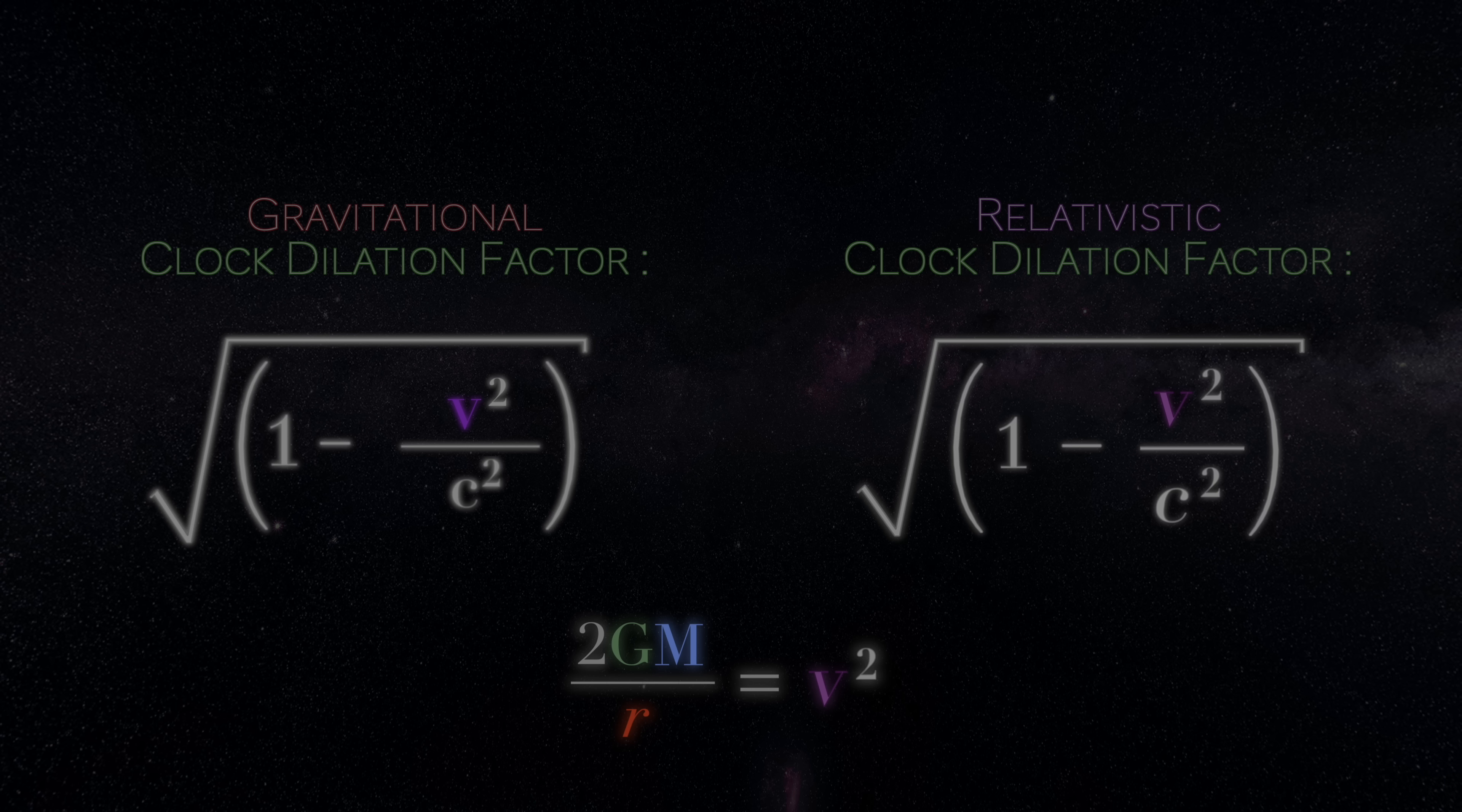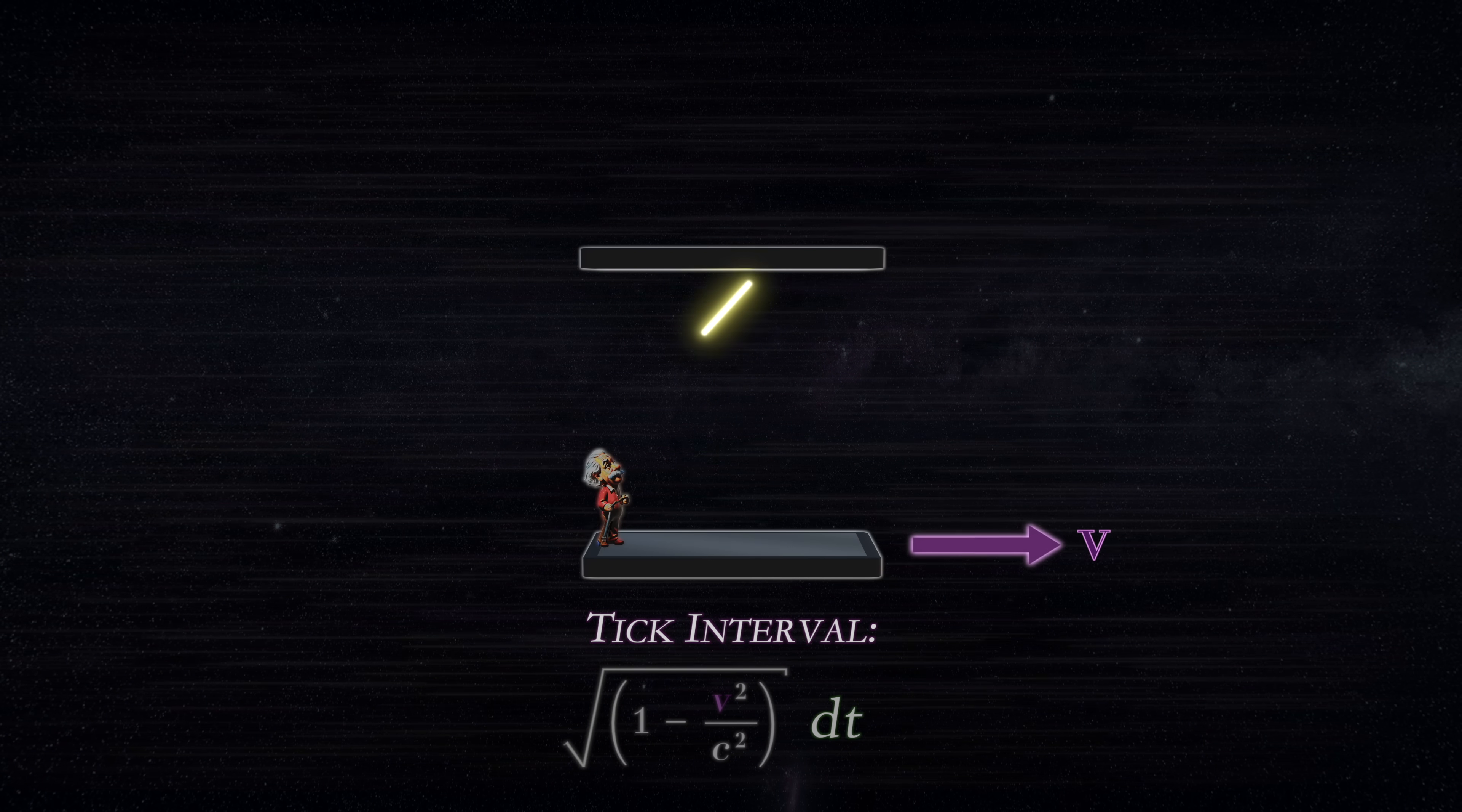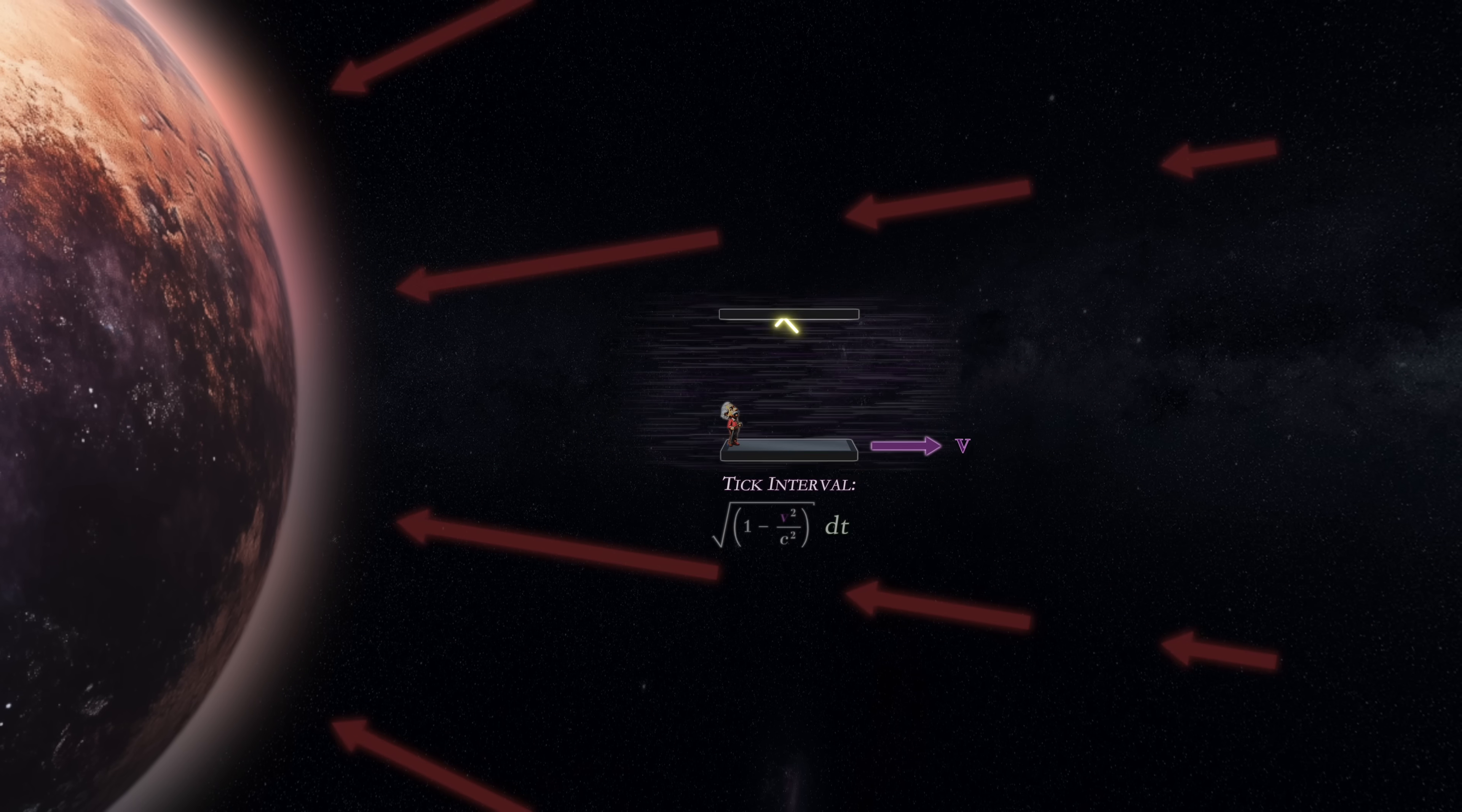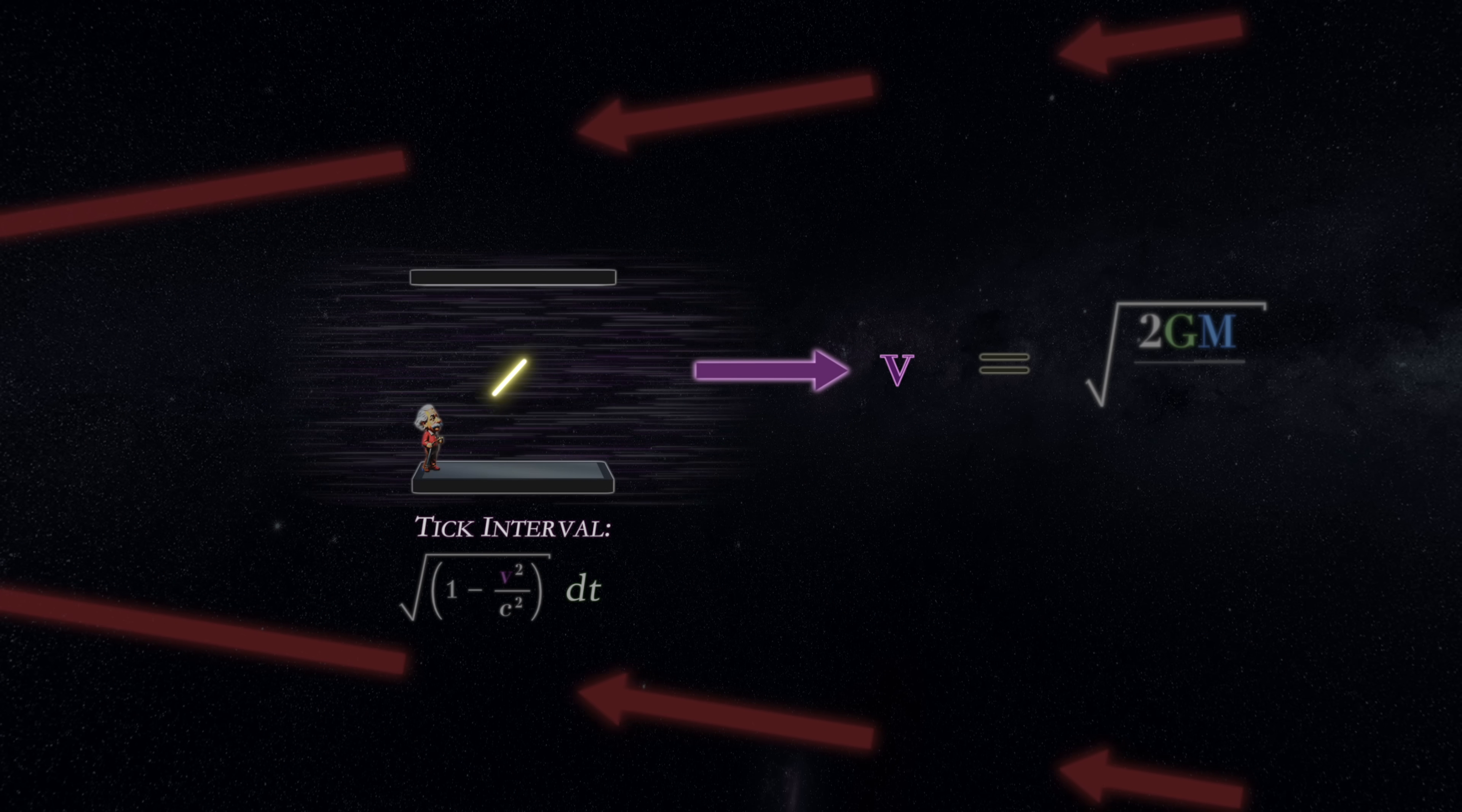If we do this, then we could claim that, just as a clock in special relativity ticks more slowly because it is traveling at some particular velocity v through space, a clock in a gravitational field will also tick more slowly because it is traveling at a particular velocity through space, a velocity equal to the square root of 2GM over r.